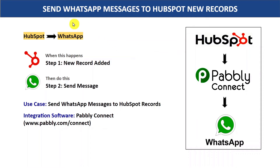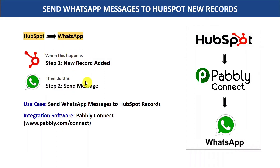In this video we are going to learn how you can send WhatsApp messages to newly created HubSpot records automatically. There is no direct connection between HubSpot and WhatsApp. We are going to integrate both of them with the help of an integration software, PablyConnect, so that whenever a new record or contact is added in HubSpot, PablyConnect will automatically send the message directly on WhatsApp. This process requires no coding knowledge and any non-technical person can also do this easily.